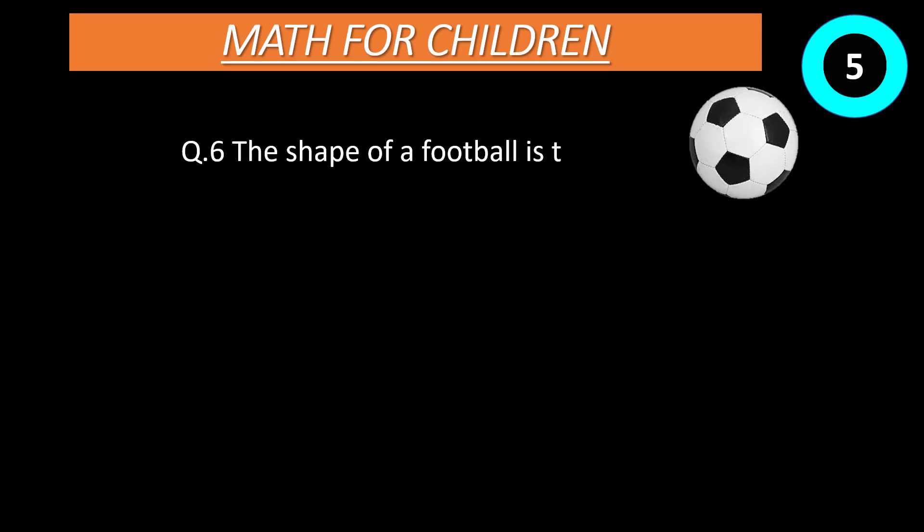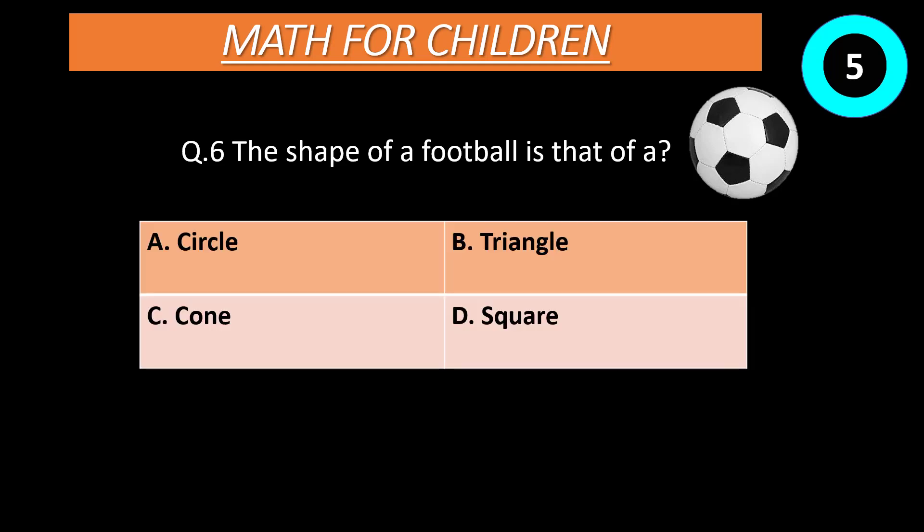Question number 6: The shape of a football is that of? Option A: circle. Option B: triangle. Option C: cone. Option D: square. Time start now. The correct answer is A, circle.